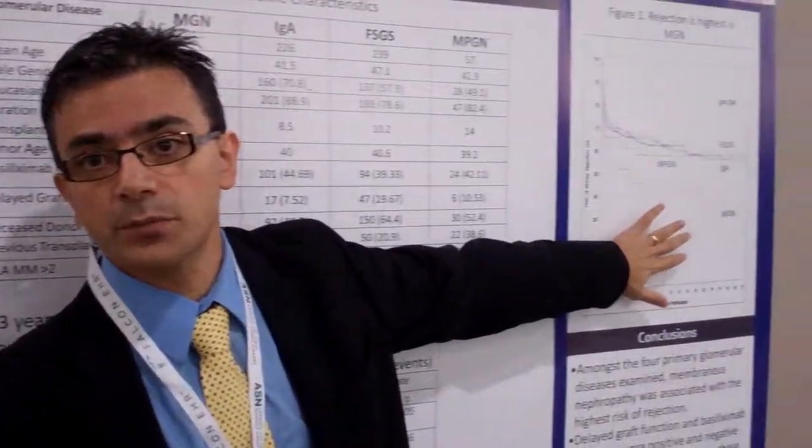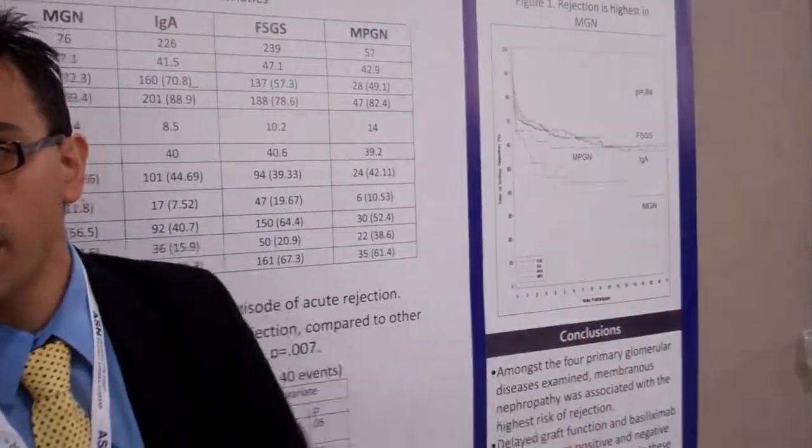This is a large database study, probably one of the largest published or examined so far at a single center. The interesting finding was that out of the four kinds of primary glomerulonephritis, the most common one associated with acute rejection post-transplant was membranous glomerulonephritis.